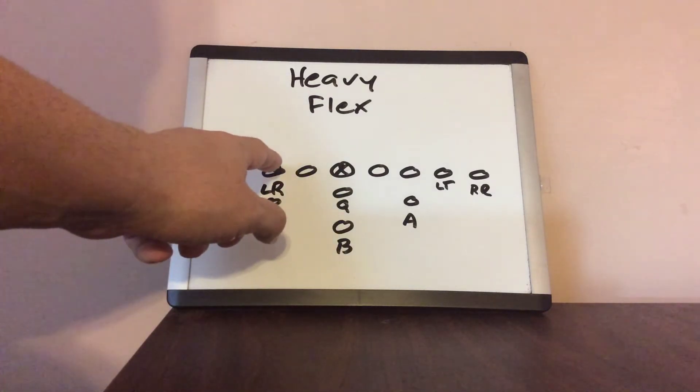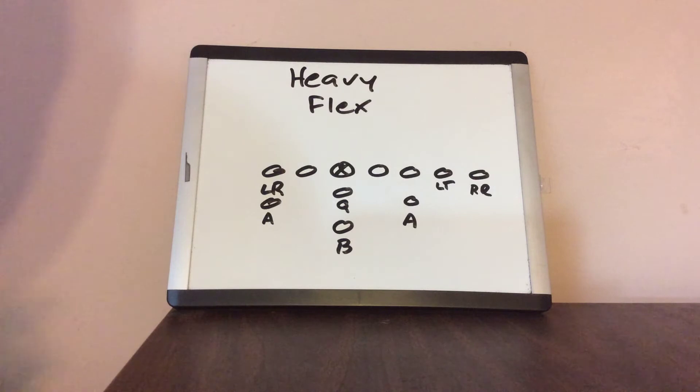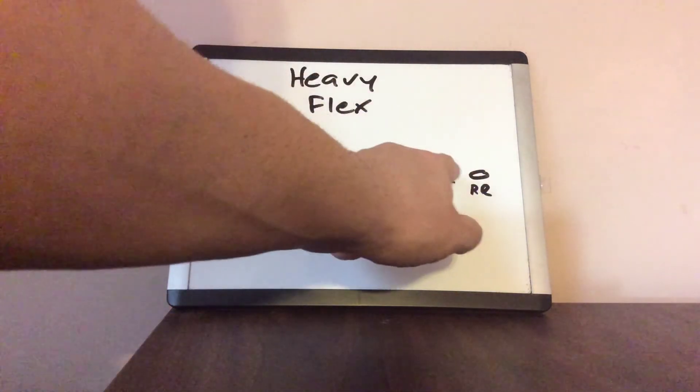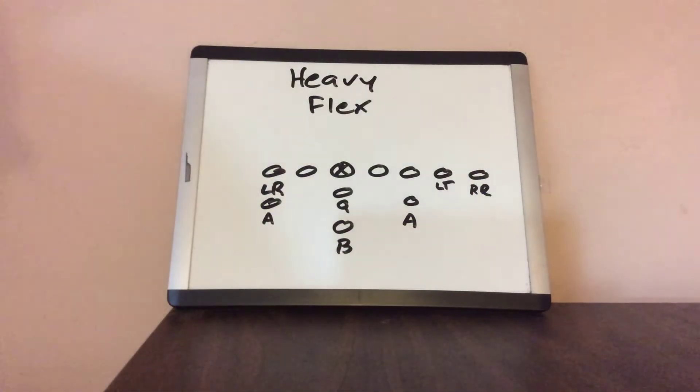The left tackle will move next to the right tackle. He'll put his inside hand at the heels of the center and he'll align three and a half feet away from the right tackle.